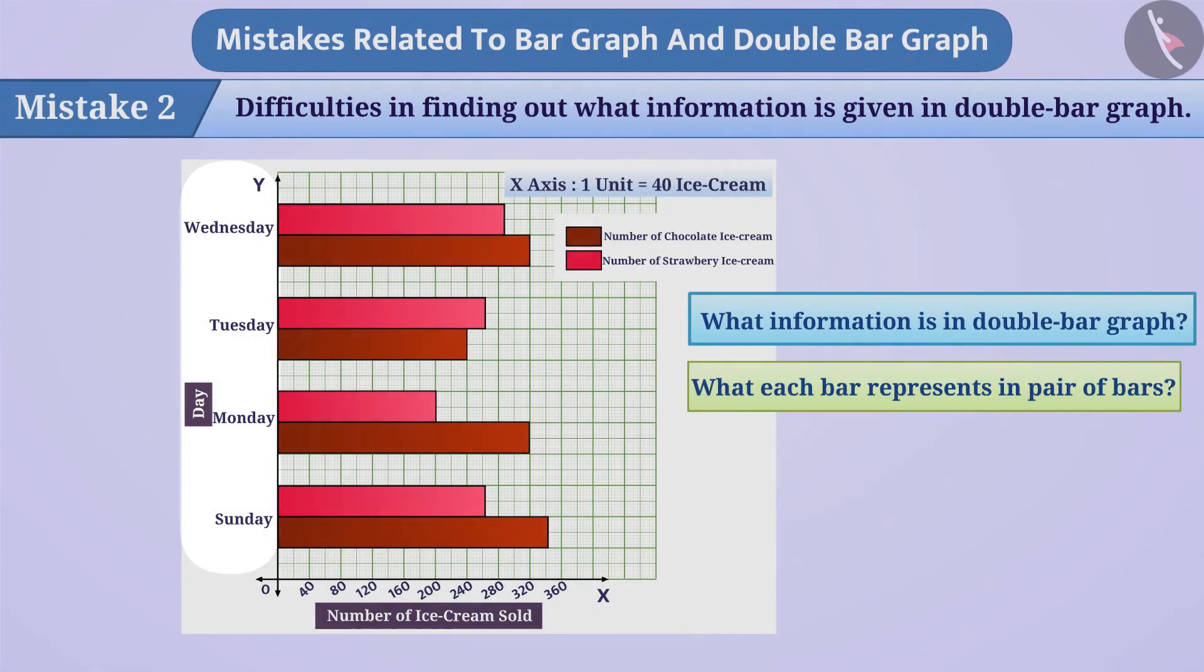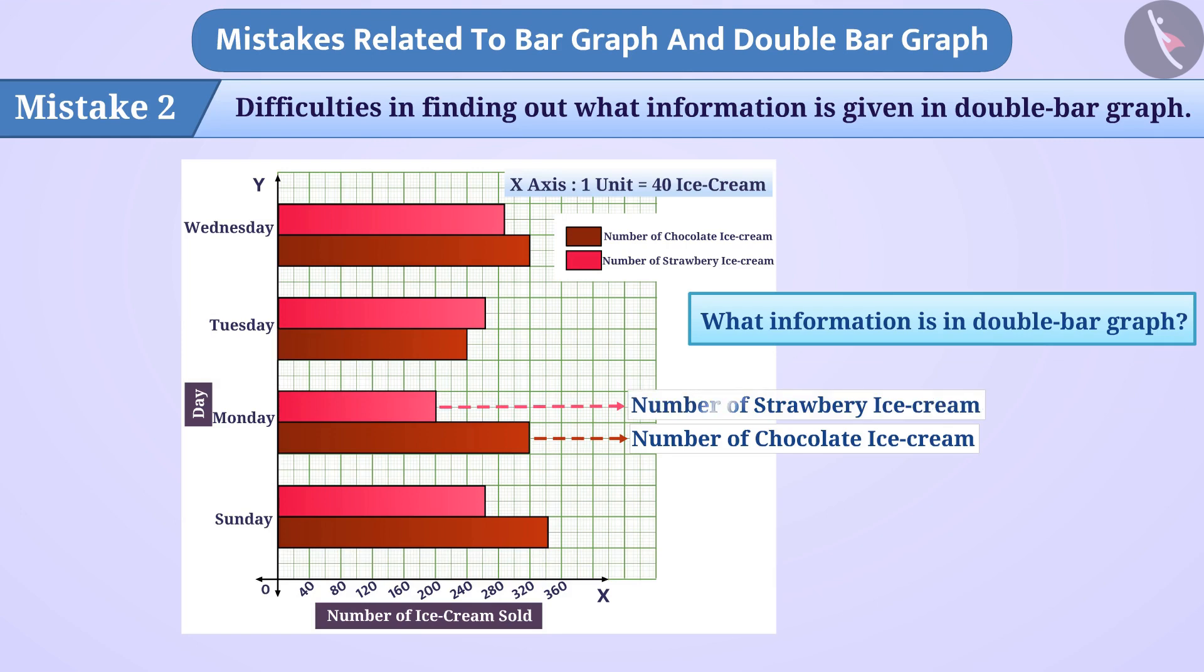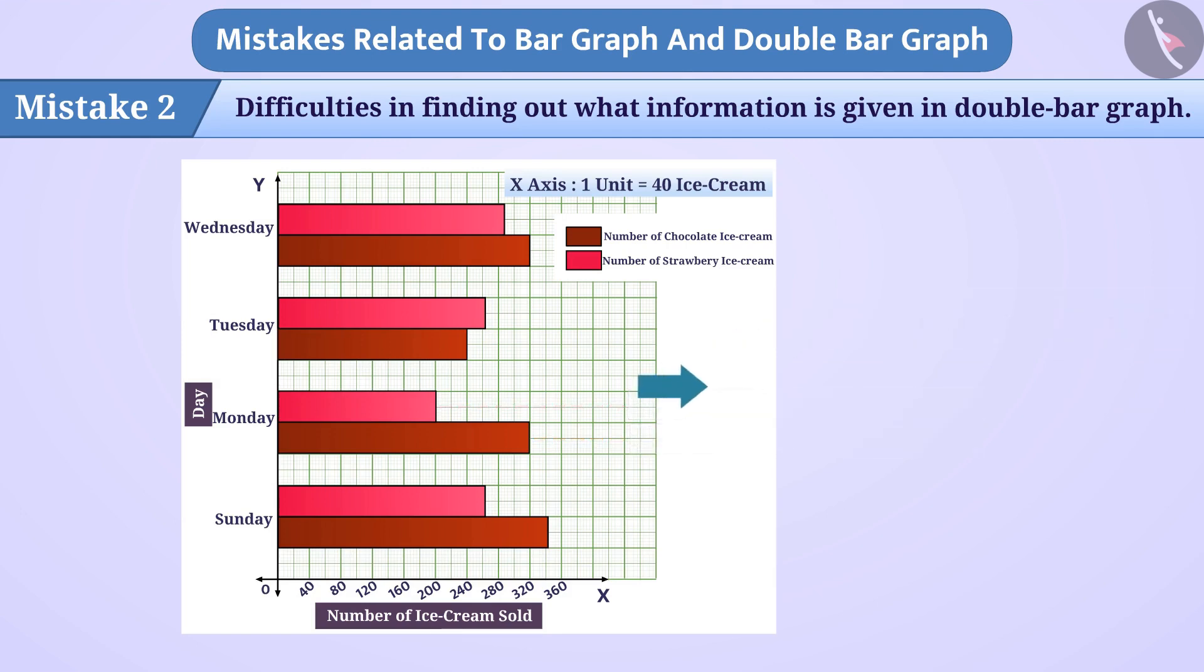Here, the brown bar represents the number of chocolate ice cream and the pink bar represents the number of strawberry ice creams. With this understanding, we can say that sale of chocolate and strawberry ice creams on different days has been compared in double bar graph.